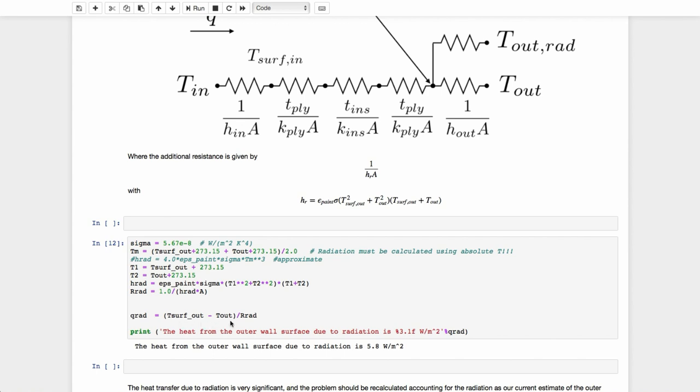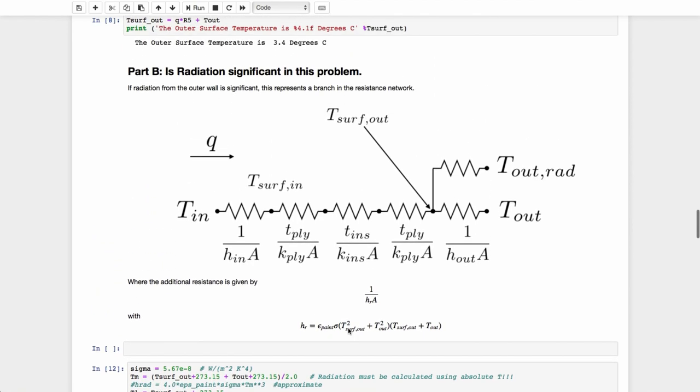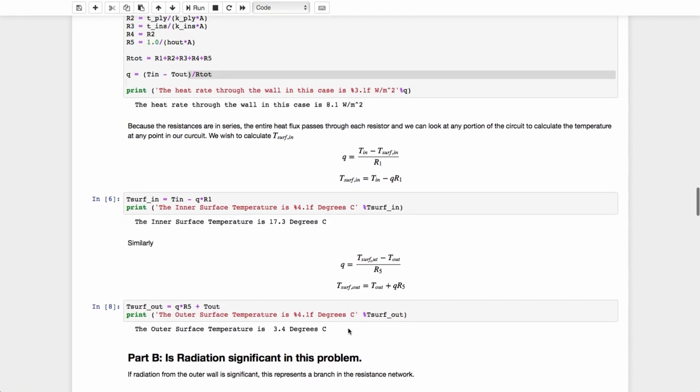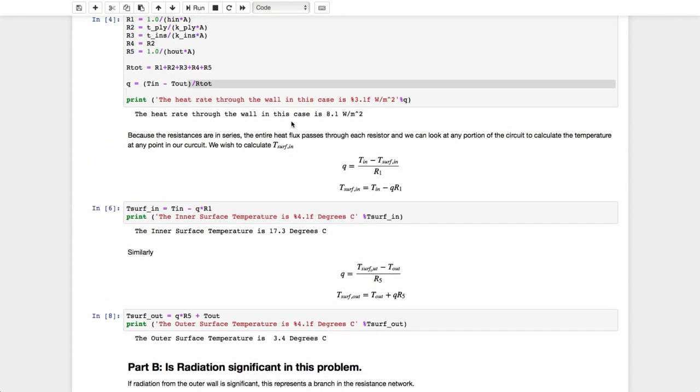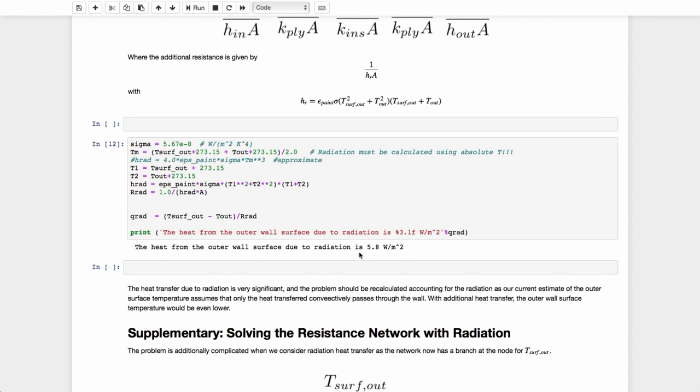It's simply T_surface_out minus T_out over the resistance due to radiation, which we just calculated. And I can see that the heat transfer from the outer wall surface due to radiation is 5.8 watts per meter squared. Now that is very significant. If we remember, we had the heat rate going through the wall as 8.1 watts when we didn't consider radiation. And so almost as much energy is being lost from that surface due to radiation as it is due to convection at that surface. So clearly our estimate was not very good and we should have considered radiation on this wall.